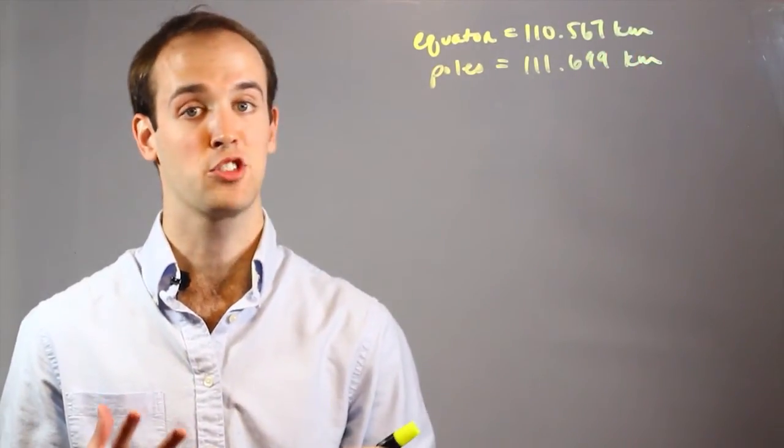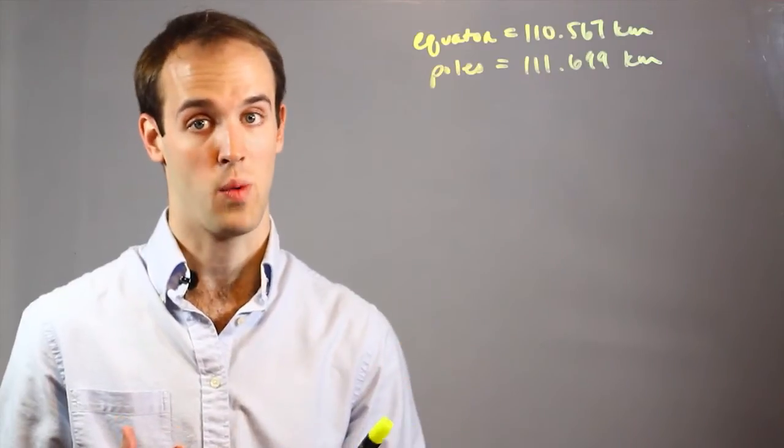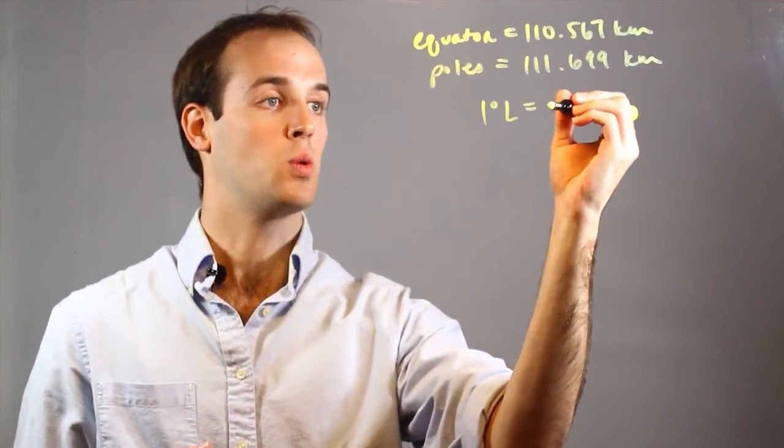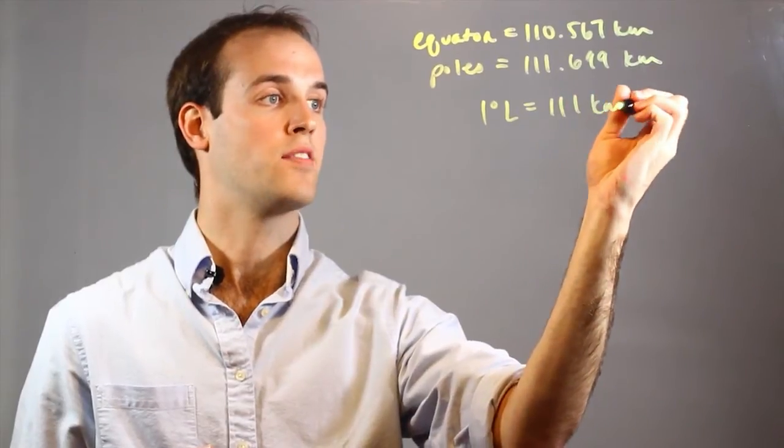So to average this out so that I can use this formula anywhere I will say that 1 degree latitude is equal to about 111 kilometers.